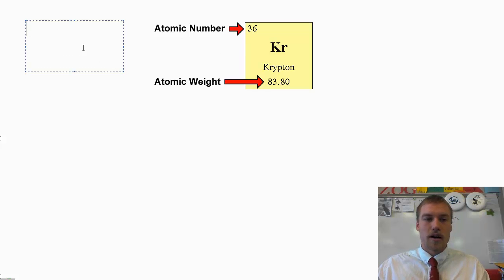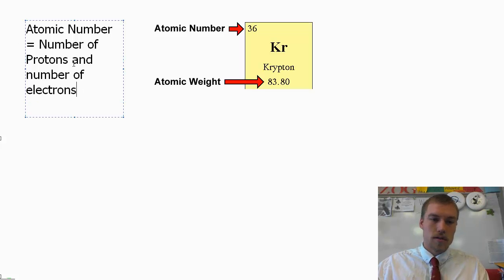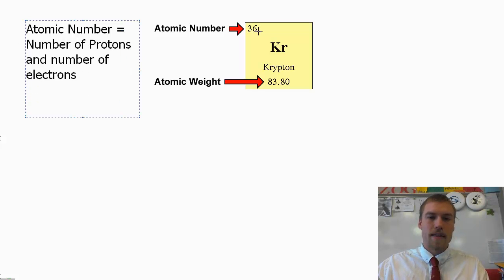So if we look up here, the atomic number, our atomic number is going to be equal to the number of protons and number of electrons. And that's because the periodic table is organized by how many protons each atom has.